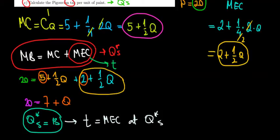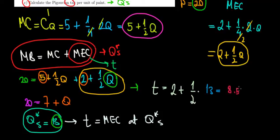So 1 over 2 times 13, 13 divided by 2 is 6.5, plus 2 is equal to 8.5. So that would be the optimal tax. Hope this makes sense, and we are done.